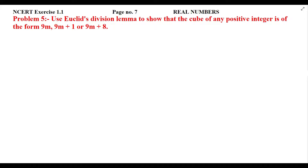Students, see NCERT Exercise 1.1, Problem number 5. Let's read this statement: Use Euclid's division lemma to show that the cube of any positive integer is of the form 9m, 9m plus 1, or 9m plus 8.